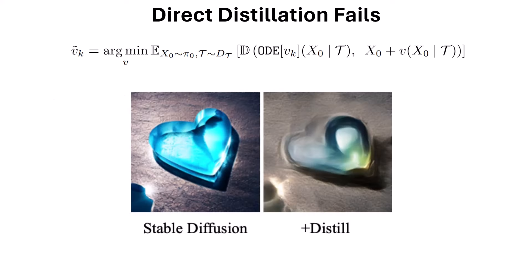After 10,000 iterations, comparing Stable Diffusion (left) to the distilled single-step model (right), we can see that the distilled one — even though it is faster — does not generate high-quality images.